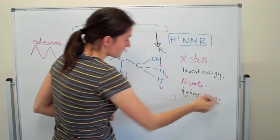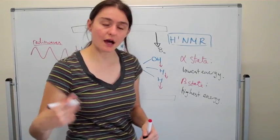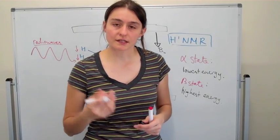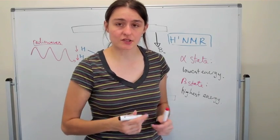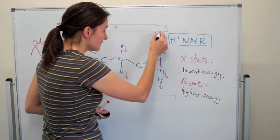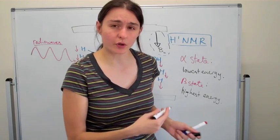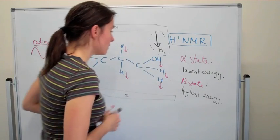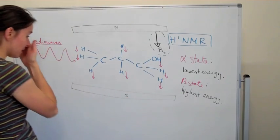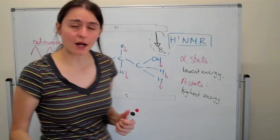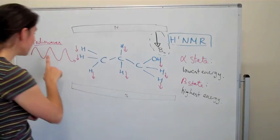Highest energy because the molecule in that case, the atom, has to fight against the external magnetic field, against this power, this strength, and so it's going to take a lot more energy to do so. So that's the beta state.